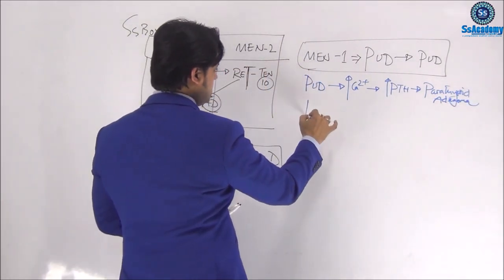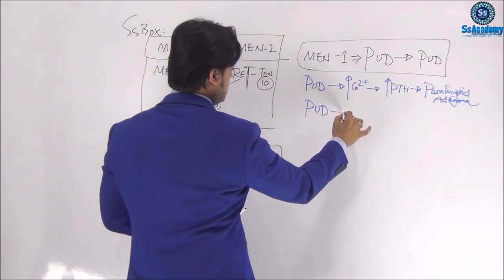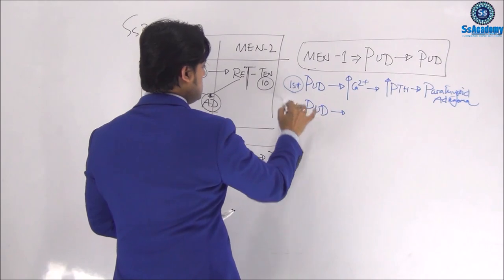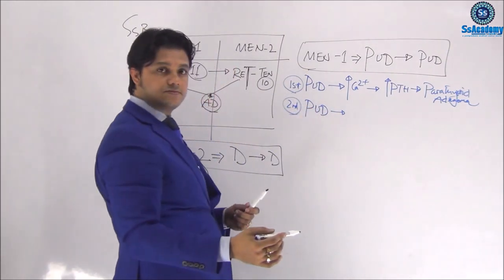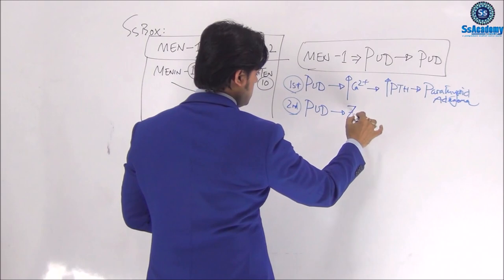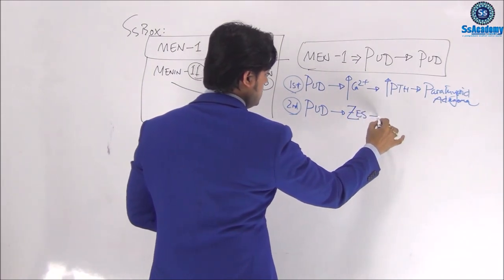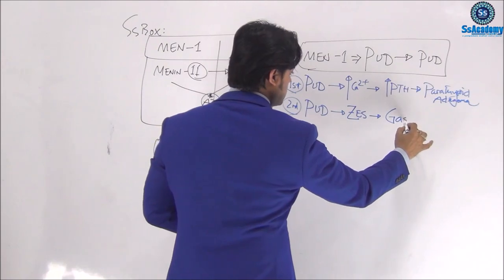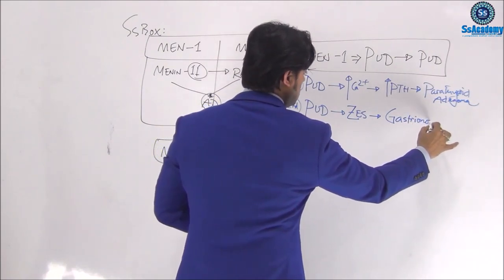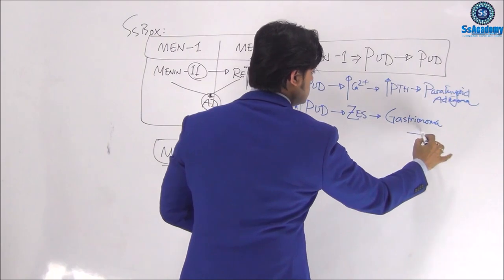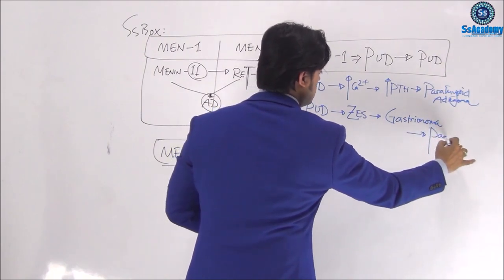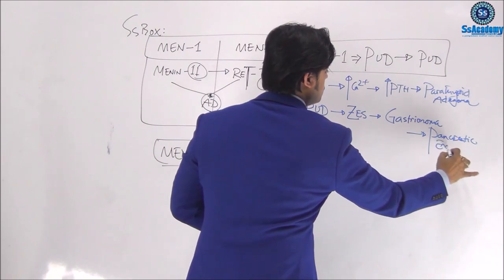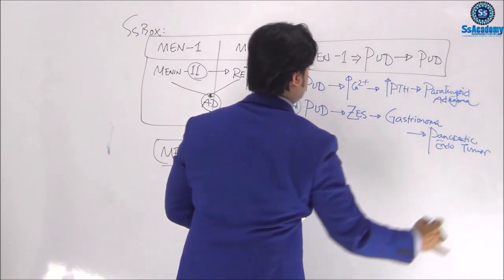And second putie, second putie is due to Zollinger-Ellison syndrome. Zollinger-Ellison syndrome is gastrinoma. Gastrinoma is nothing but a pancreatic tumor, endocrine tumor.